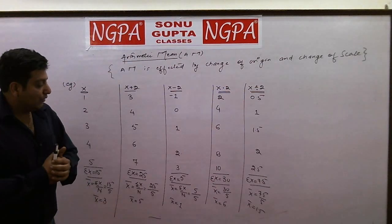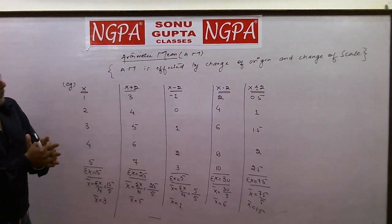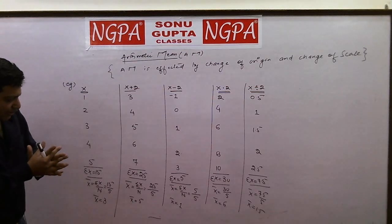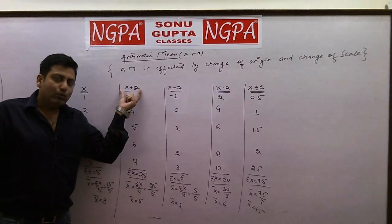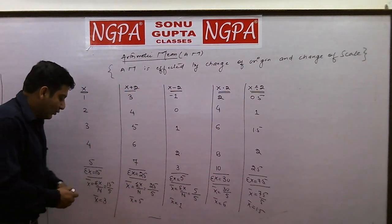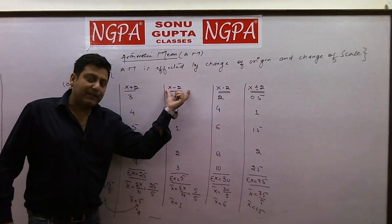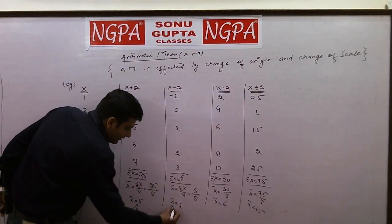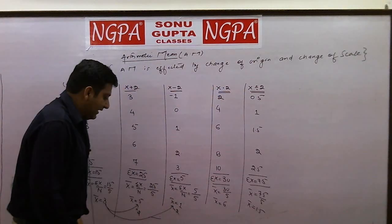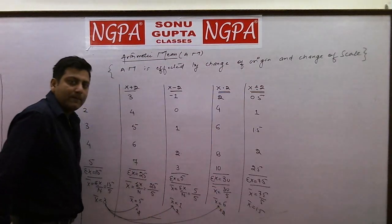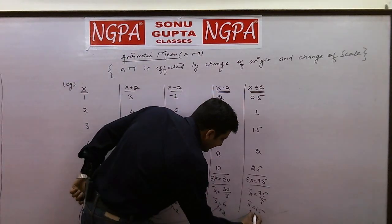So this is how we calculated mean by different methods or by different data. Now let's see what this property means. There's something repetitive here. If we add 2 to every value of x, the original mean is also increased by 2. If we subtract 2 from every value of x, the original mean is also subtracted by 2. If we multiply 2 to every value of x, the original mean is also multiplied by 2. And if every value of x is divided by 2, the original mean is divided by 2.